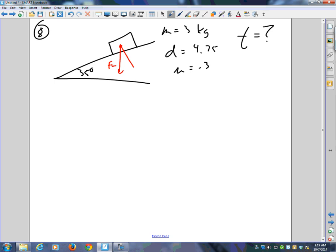3 kilograms, 35 degrees, the distance is 4.75, and the mu value is 0.3. Did I miss anything? And we want to know, we're trying to find time, right? Okay. To get to T, we're going to have to find the acceleration, right? Does everyone see that? To get to T, we're going to find acceleration. So we've got to deal with, to get to acceleration, we're going to basically have to figure out what's the net force down the plane.